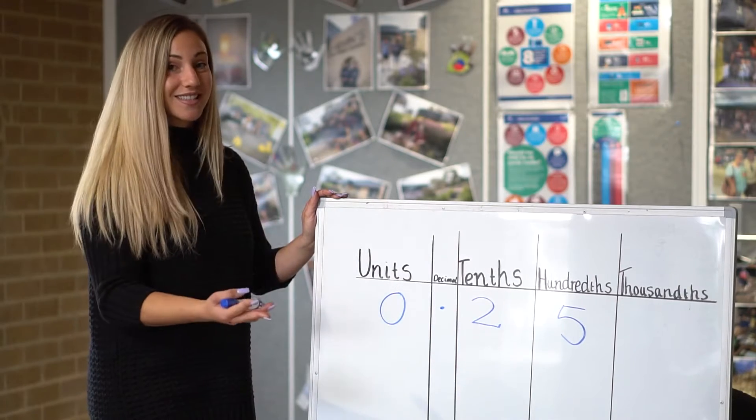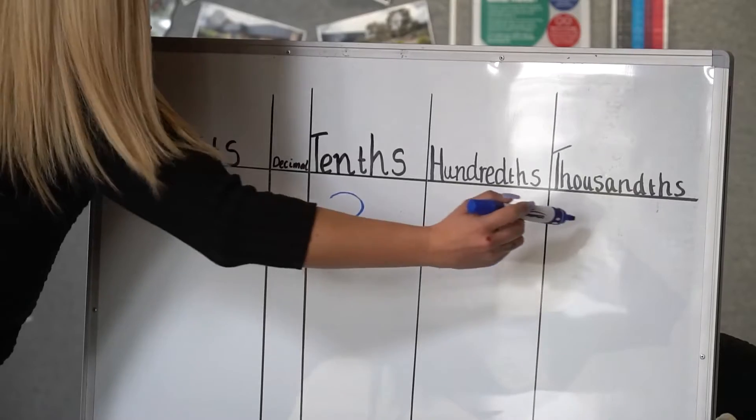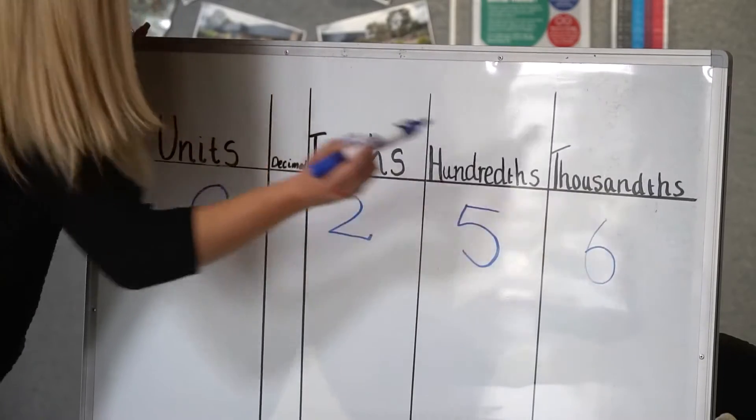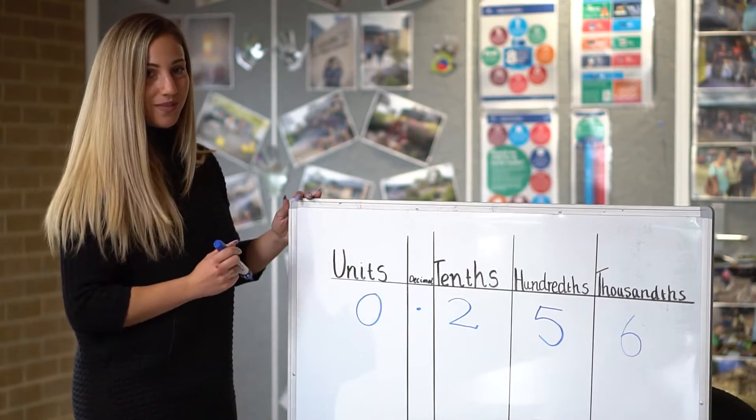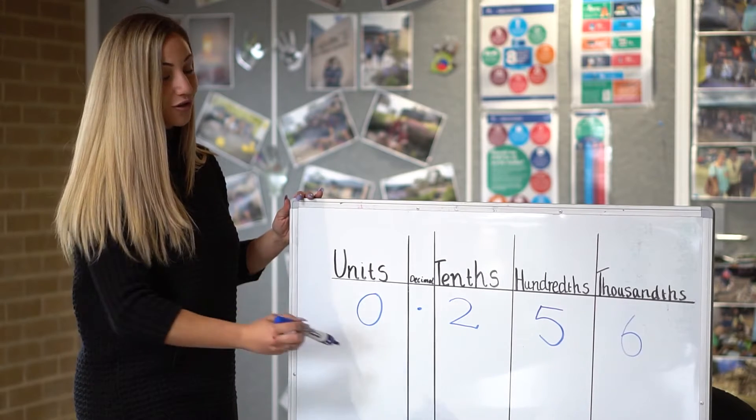We're going to add to this decimal now. If I add a six in the next place value column, I now have a new decimal.